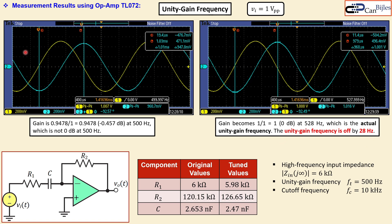All measurements were taken with the TL072 op amp and the tuned component values. The errors in cutoff frequency and unity gain frequency are considered acceptable. This concludes the differentiator design example using an op amp, covering component value calculation, simulation, tuning, and measurement verification. If you have any questions or comments, please let me know — see you next time.